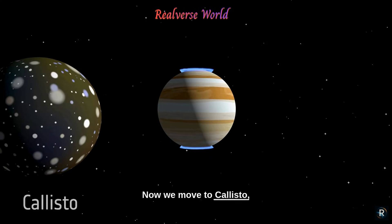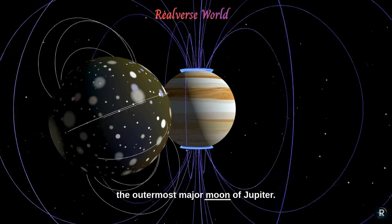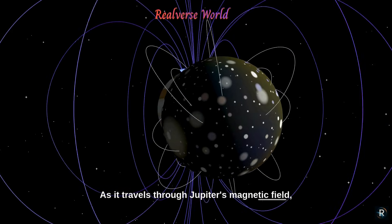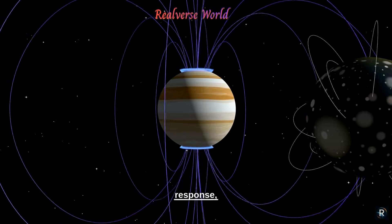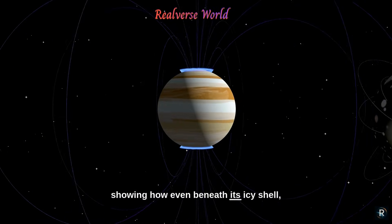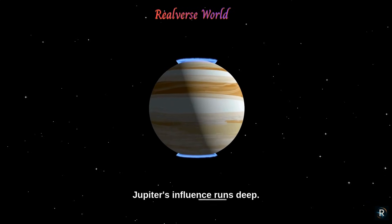Now we move to Callisto, the outermost major moon of Jupiter. As it travels through Jupiter's magnetic field, its hidden subsurface ocean creates an induced magnetic response, showing how even beneath its icy shell, Jupiter's influence runs deep.